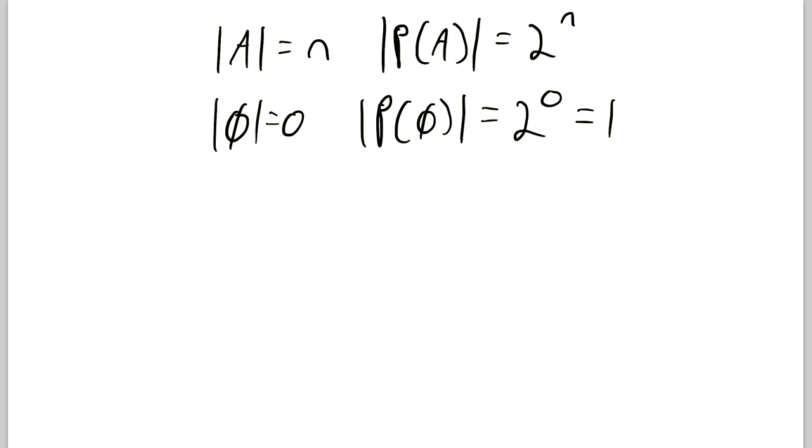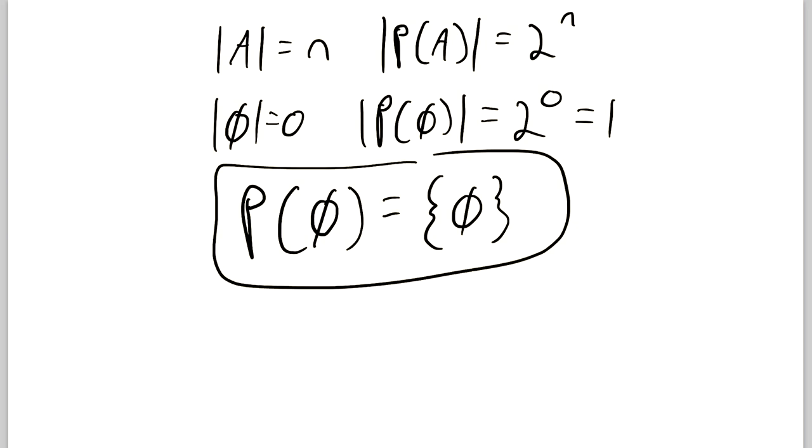But what is that element? Well, let's take a look. The power set of the empty set is equal to the set that contains only the empty set. So why is this? Well, remember that the power set of the empty set is just going to be the set containing every subset of the empty set. The empty set is the only subset of the empty set. And that's why it's the only element in the power set of the empty set.